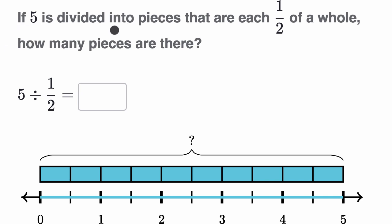If five is divided into pieces that are each one half of a whole, how many pieces are there? And this would be the equivalent of saying, what is five divided by one half?